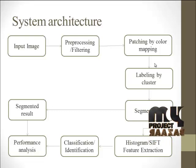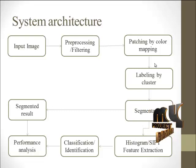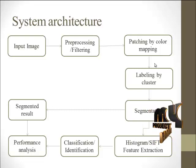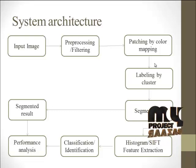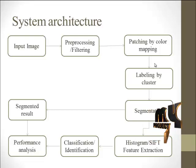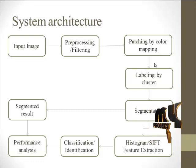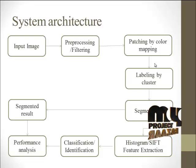We have two processes: patching maps colors corresponding to the image based on a color map, and the color-mapped regions are labeled into clusters. When segmenting unlabeled clusters, unwanted regions are neglected during segmentation. The segmented result is taken for performance analysis. After segmentation, we classify the image as an enhancement in this paper — classification is part of this enhancement.